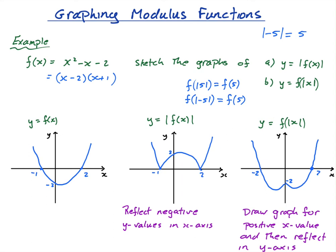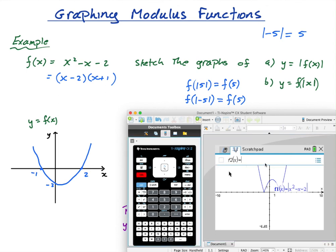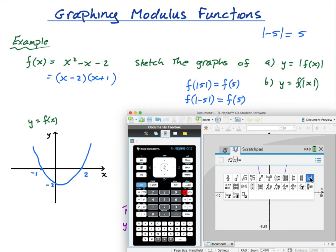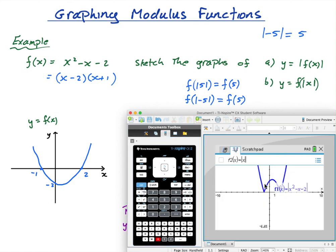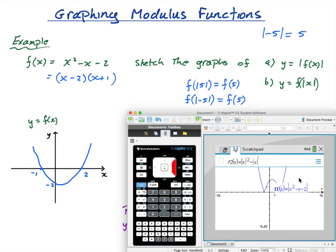For the second one, f of mod x, I press tab to do it on the same set of axes. Now I need to put the modulus around the x only. So it looks like: mod x squared minus mod x minus 2 — the squared is outside the modulus.